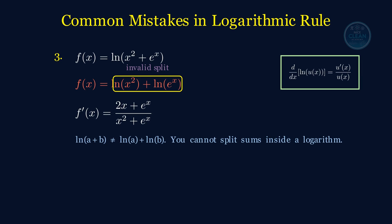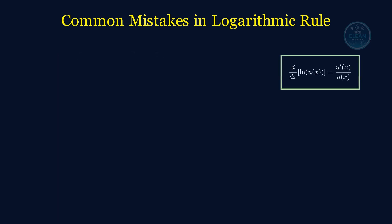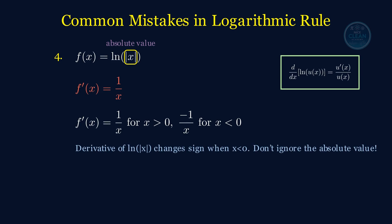And finally, the sneaky one. The derivative of the natural logarithm of the absolute value of x. Most people just write 1 over x and call it a day. But when x is negative, that changes the sign. So technically, f prime of x equals 1 over x for x greater than 0, and negative 1 over x for x less than 0. That's because of the absolute value. It flips the slope on the negative side.